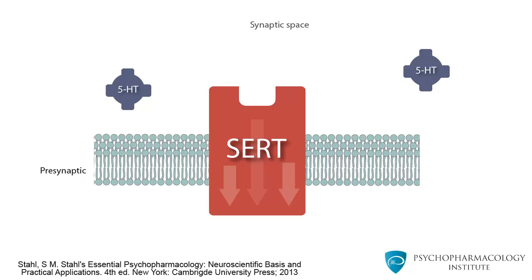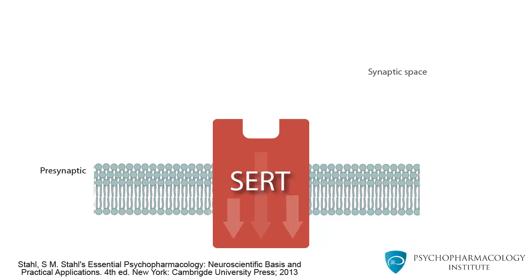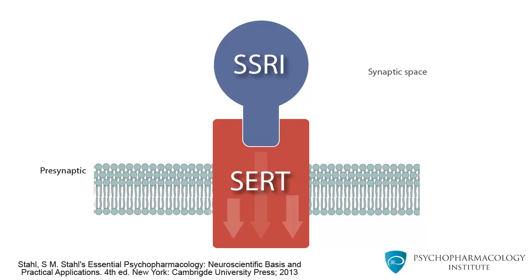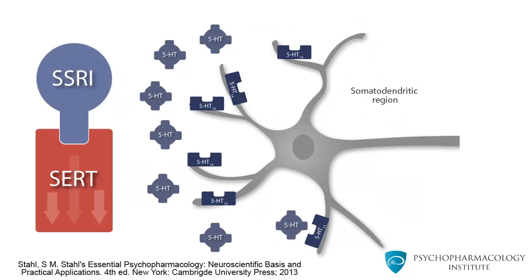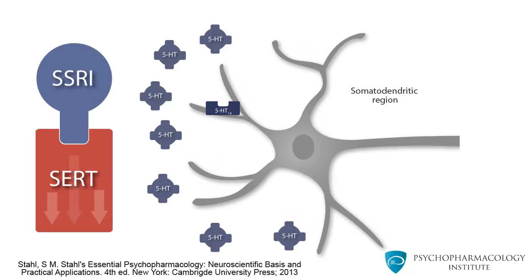The serotonin transporter, SERT, is a monoamine transporter protein. It is a membrane protein that transports serotonin from synaptic spaces into presynaptic neurons. Selective serotonin reuptake inhibitors and other antidepressants block the SERT transporter. The result is an increased availability of serotonin in the synaptic space. If we compare this image with the previous illustration showing the somatodendritic region, the difference is that you can see an increase of serotonin concentration. This has implications in terms of regulation of 5-HT1A receptors.